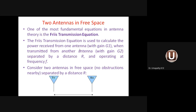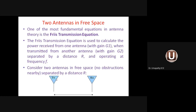The purpose of the Friis equation is to calculate the power received from one antenna when transmitted from another. G2 is the gain of the transmitter antenna, G1 is the gain of the receiver antenna. We want to calculate power received at the receiver antenna due to the transmitting antenna at distance R.